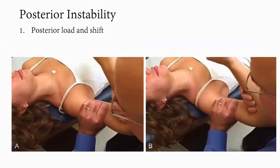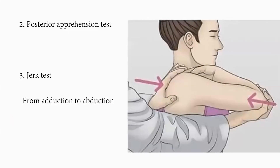For posterior instability, the posterior load and shift test is performed: instead of anterior translation, posterior translation of the humeral head is assessed and the amount of translation over the posterior rim is detected. The posterior apprehension test has the examiner standing behind the patient, applying a posterior-directed force to the elbow with the shoulder in 90 degrees of abduction, elbow flexed, and shoulder in full internal rotation. A positive test is a palpable subluxation, dislocation apprehension, or pain reproducing the patient's symptoms.